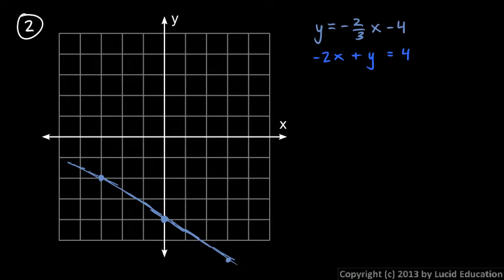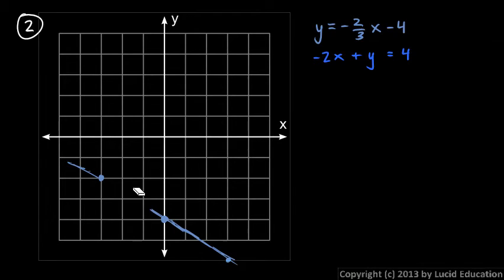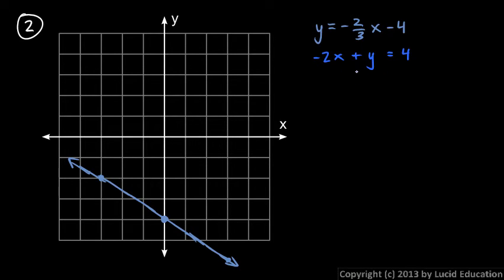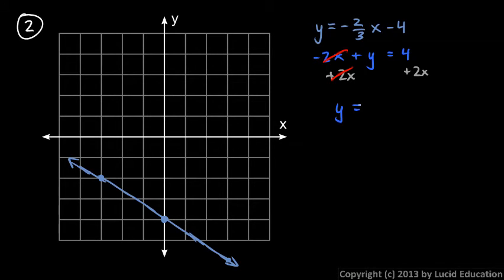Let me try that again — I'm not real happy with that graph. Okay, that's a little better. And the next line is negative two x plus y equals four. We can do this a couple of different ways. I'm going to do the algebra here to convert this to slope-intercept form. That turns out it's really easy — just add two x to each side, and then you get y equals two x plus four. So let's graph that.